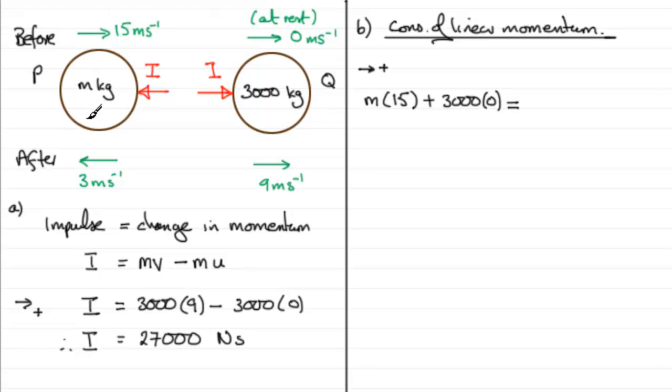This equals the total momentum after impact. You've got to be very careful now because you've got the mass of P—that's m—multiplied by the velocity after impact. Its speed is 3 meters per second, but it acts in the opposite sense to this direction, so it's going to be a velocity of minus 3.